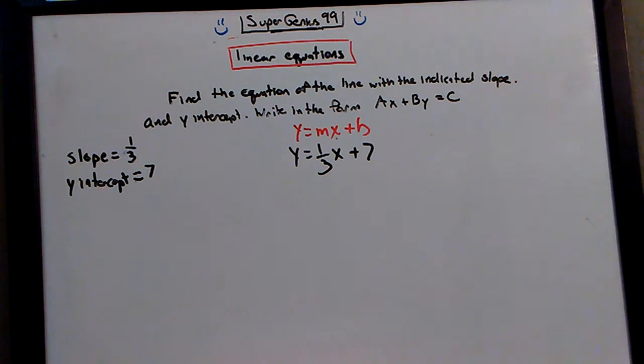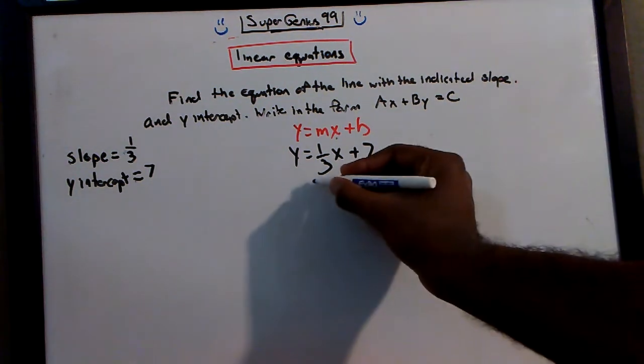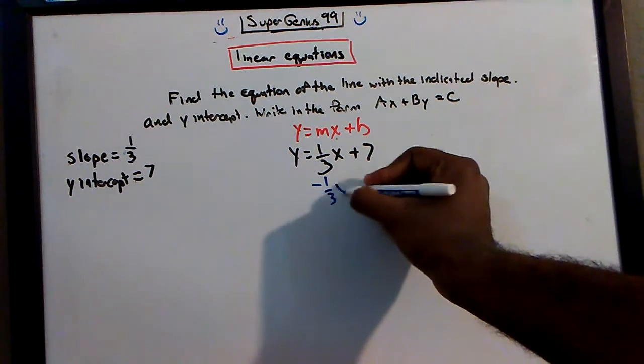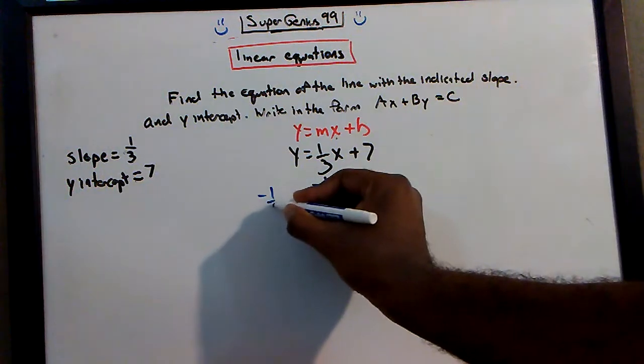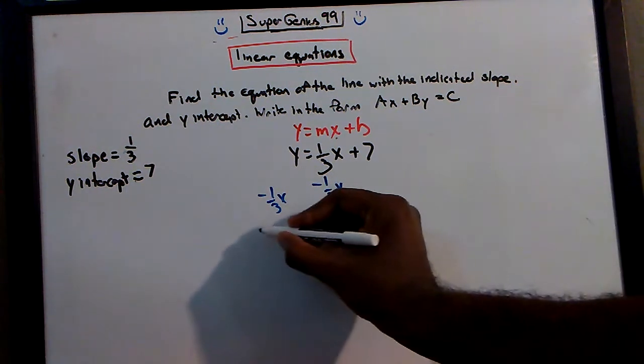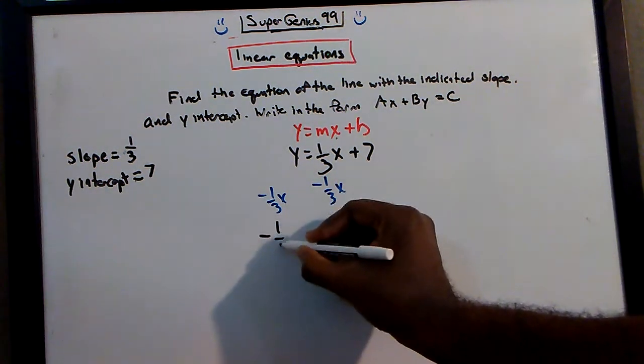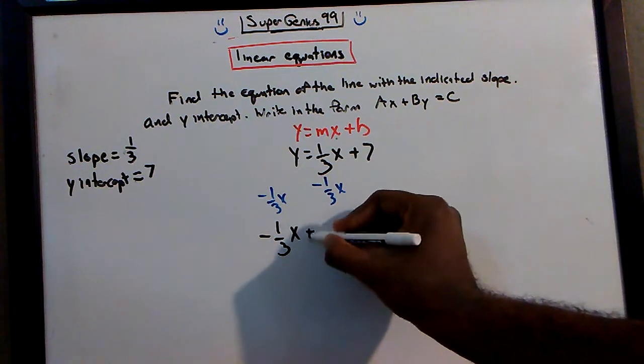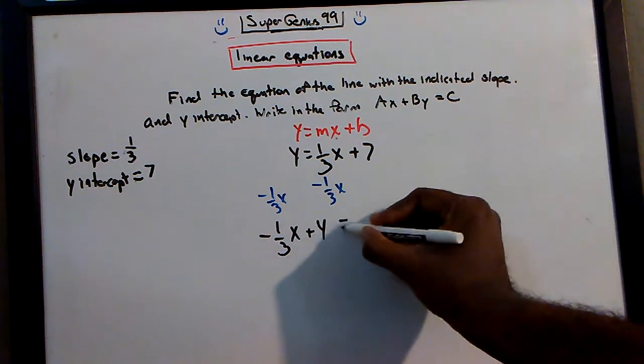So what do I need to do? Bring the x over. So how do we properly do that? Yes, subtract 1 third from both sides, 1 third x. And so that leaves you with negative 1 third x plus y is equal to 7.